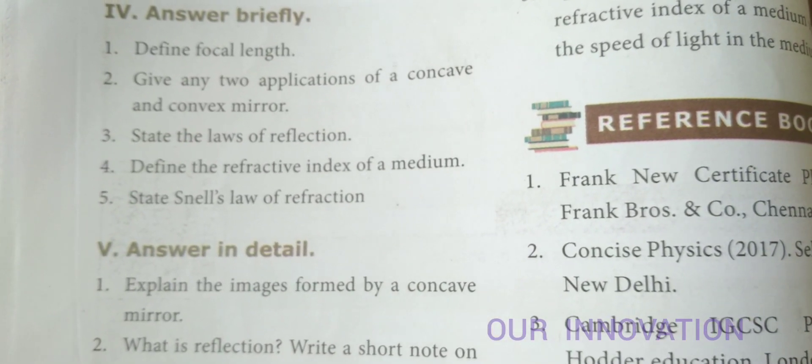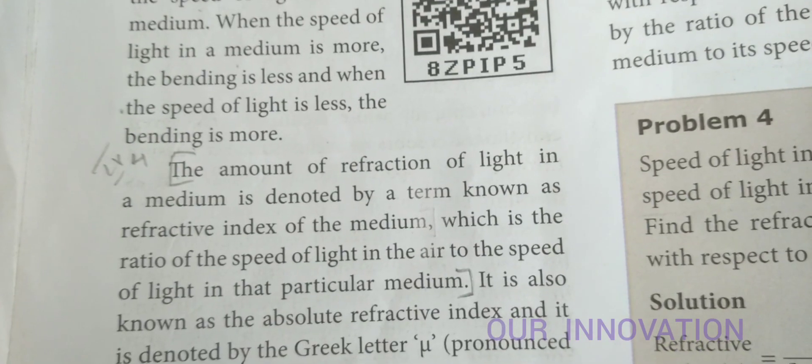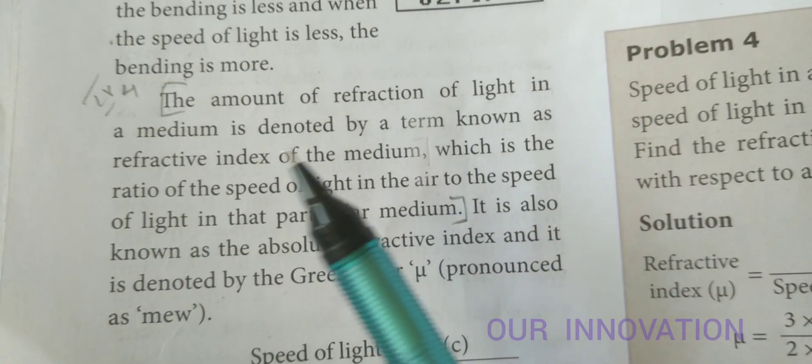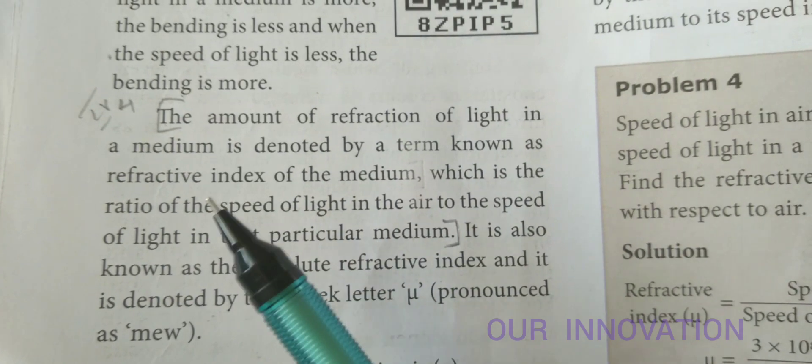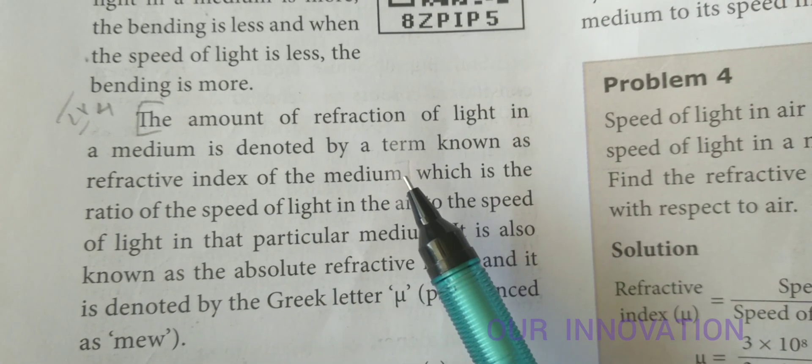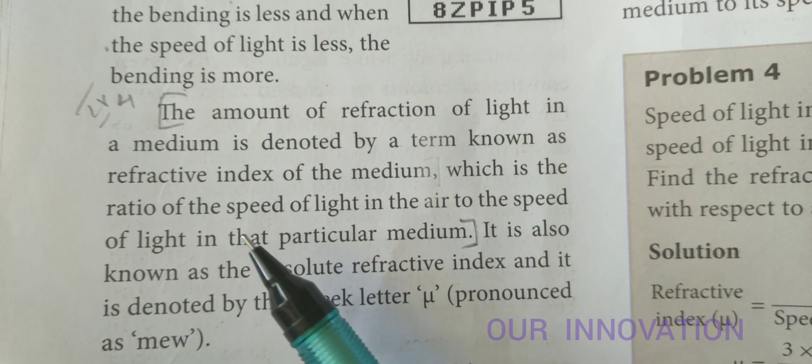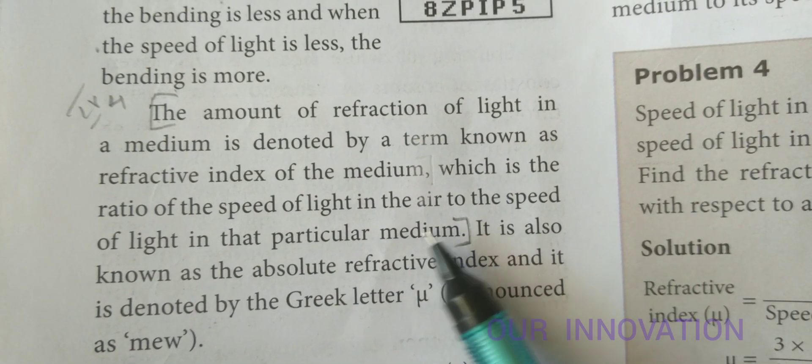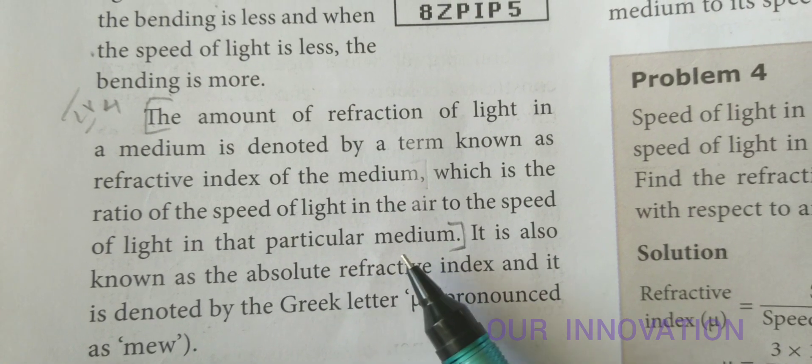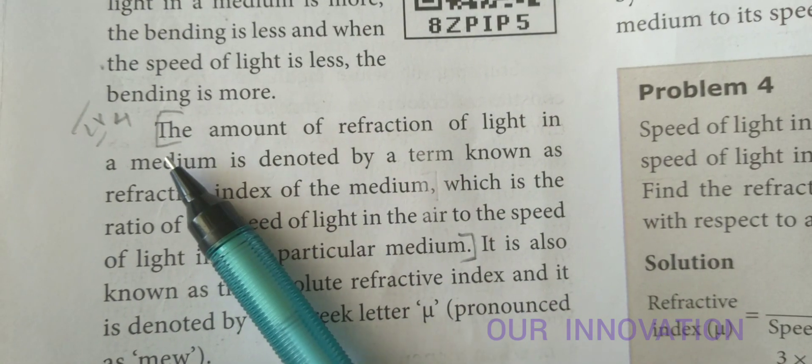Define refractive index of a medium. Page number 30. The amount of refraction of light in a medium is denoted by a term known as refractive index of the medium, which is the ratio of the speed of light in air to the speed of light in that particular medium. Mark it from here, the whole point.